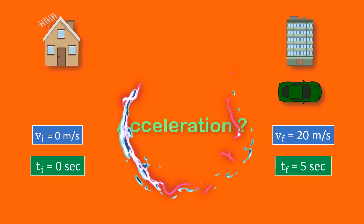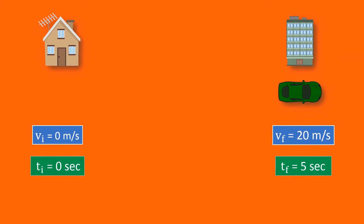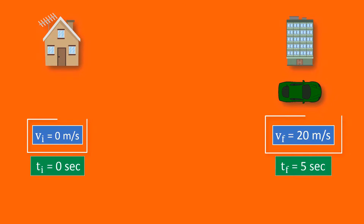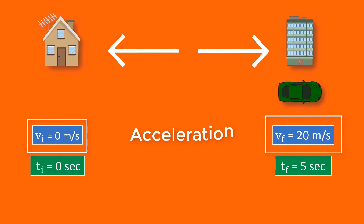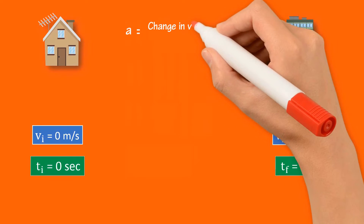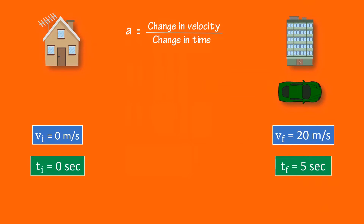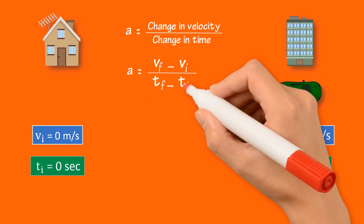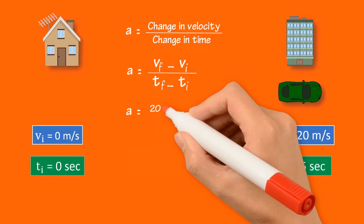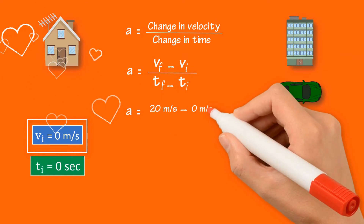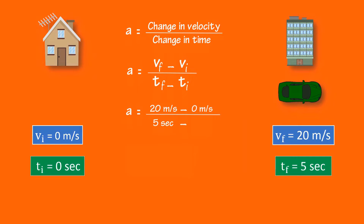Can you find the acceleration of your car from your home to the city? The velocity of the body changed from zero meters per second to 20 meters per second over five seconds. Remember that when velocity changes, acceleration is produced — hence the car accelerated between your home and the city. Acceleration equals change in velocity divided by change in time, which is vf minus vi divided by tf minus ti. Here vf = 20 m/s, vi = 0 m/s, tf = 5 s, and ti = 0 s. Hence, acceleration equals 4 meters per second squared.